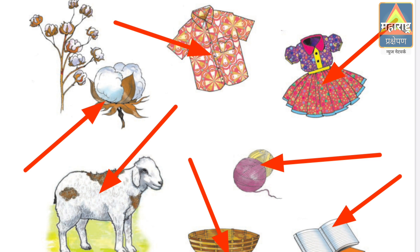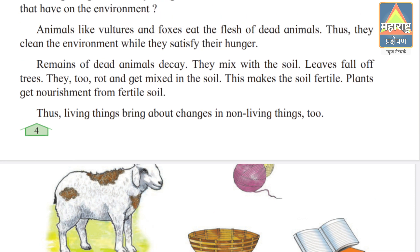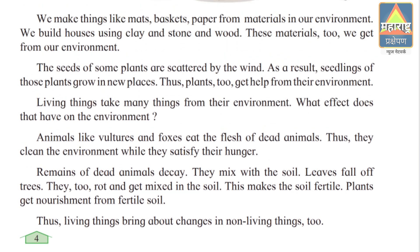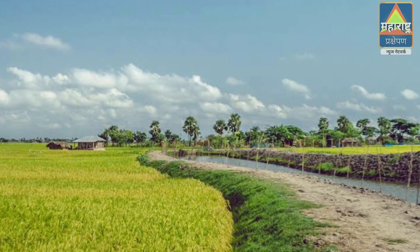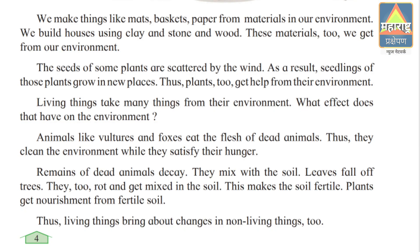We build houses using clay, stones, and wood. This material too we get from our environment. The seeds of some plants are scattered by the wind, and as a result those plants grow in new places.